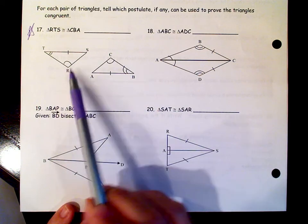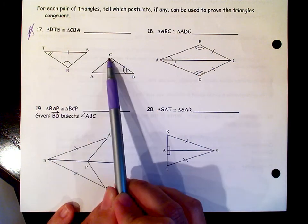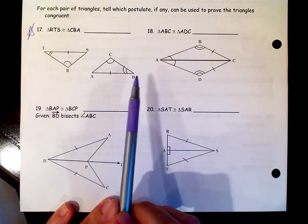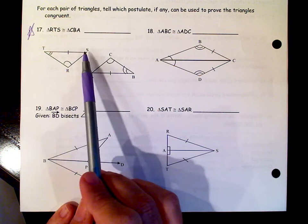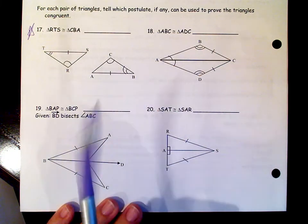Angle R and angle C are congruent to each other. Angle T and angle B are congruent to each other. And then segment TS and segment AB are congruent.